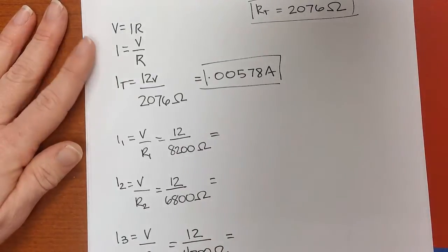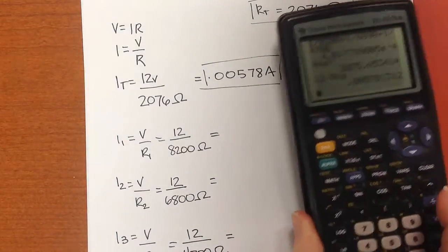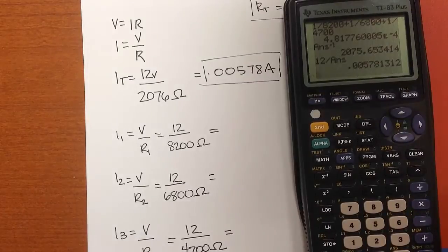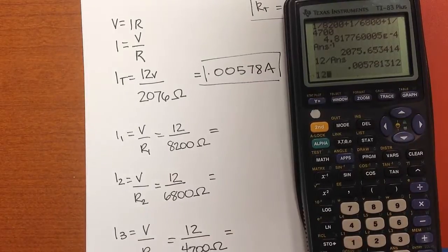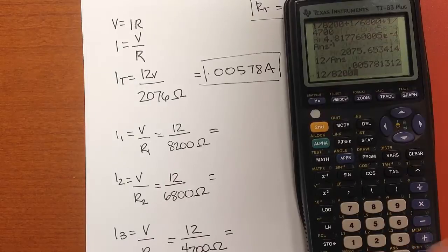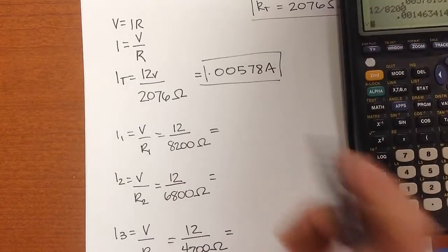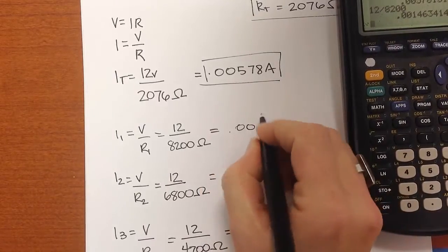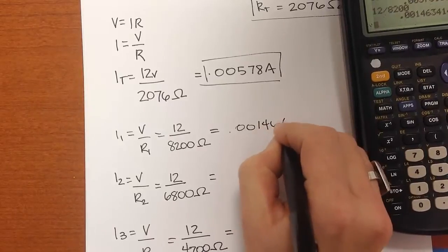So I'll go back to my calculator and punch those all in. So 12 divided by 8,200, 0.00146 amps.